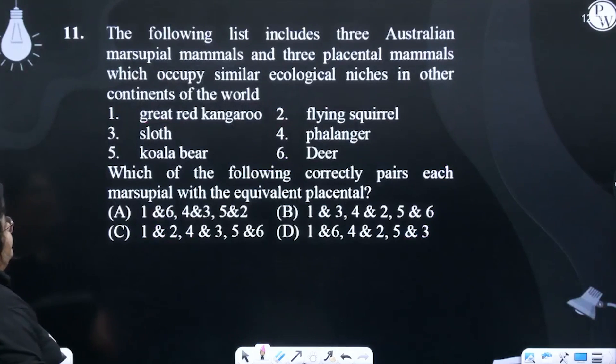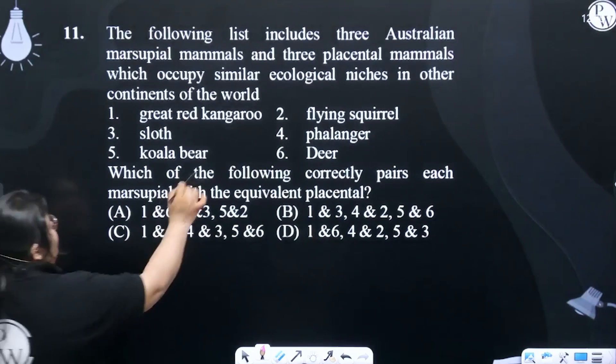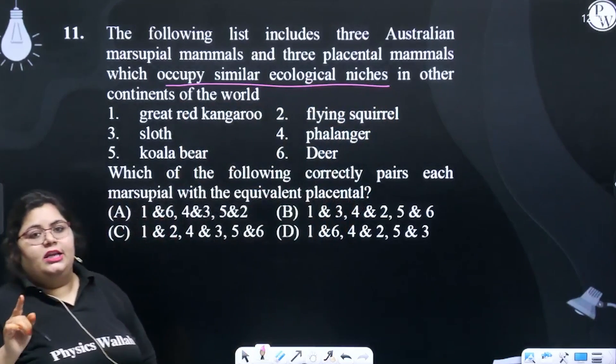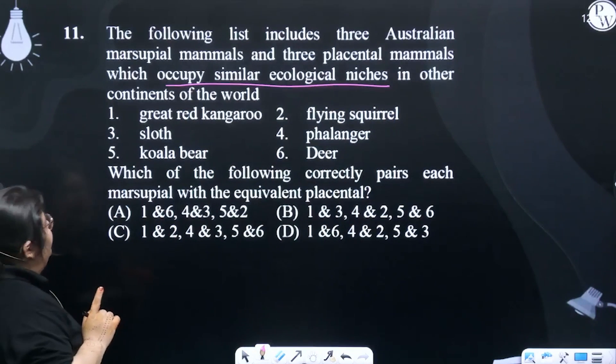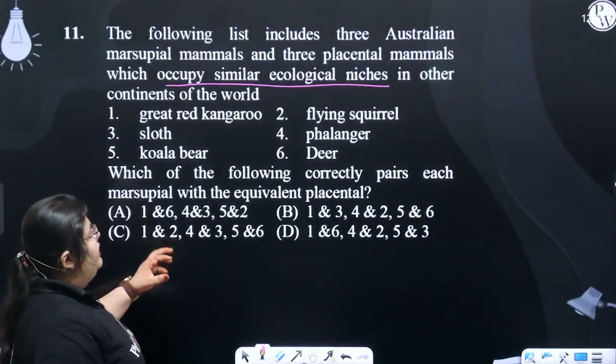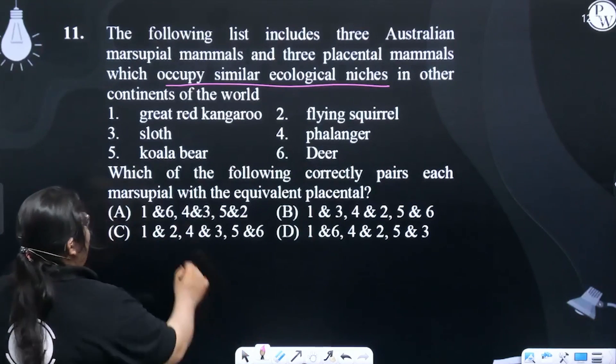Next question says, the following list includes three Australian marsupial mammals and three placental mammals which occupy similar ecological niches. They have the same ecological niches in other continents of the world. Which of the following correctly pairs each marsupial with the equivalent placental? What do we have to do here?